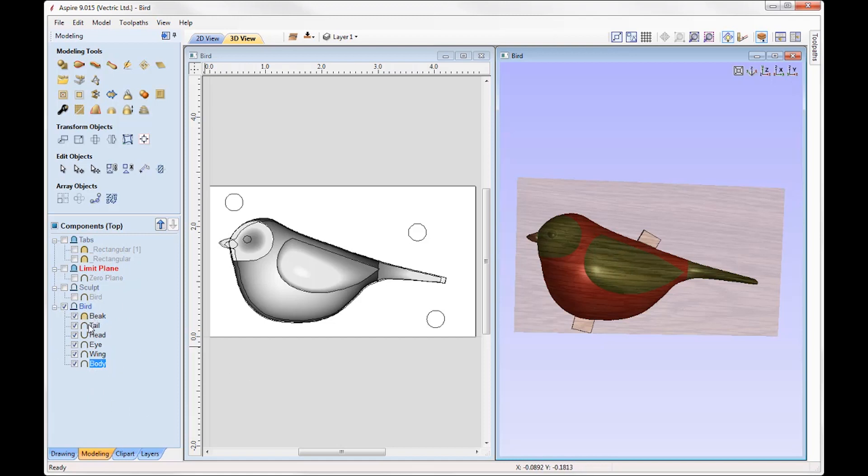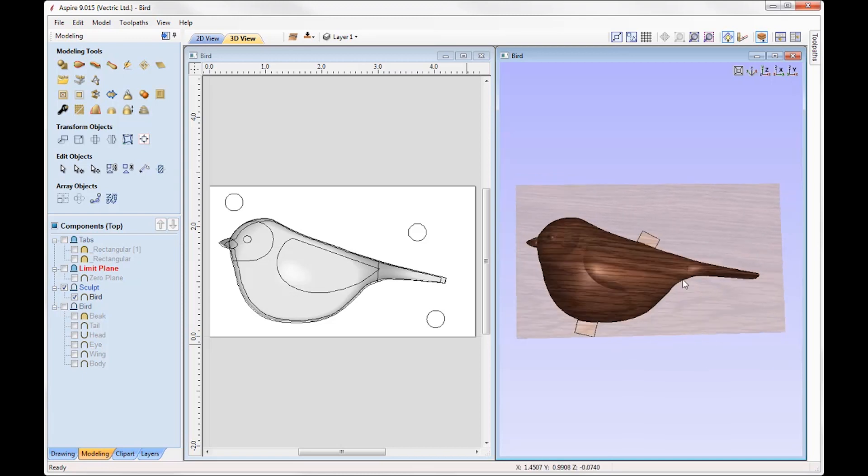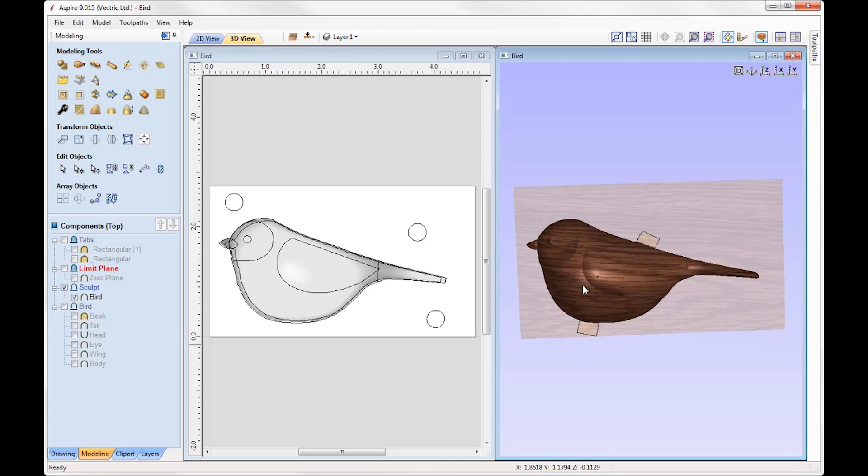So once she's created all of the individual components what she's then done is use this icon here, Create Component from Visible Model, and what that does is it creates a brand new component based on what it can see in the 3D view which is this component here. So she's basically just created a new component based on all of the building blocks, in which case she can then go in and sculpt, smooth, and blend in parts as she requires. So you can see her finished bird is in place there.